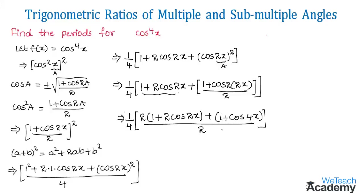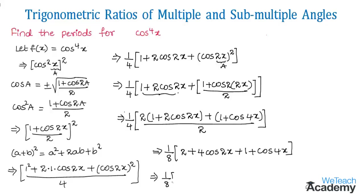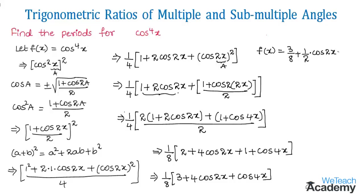That implies we get (1/8)(2 + 4cos 2x + 1 + cos 4x), which simplifies to (1/8)(3 + 4cos 2x + cos 4x). So f(x) = 3/8 + (1/2)cos 2x + (1/8)cos 4x.